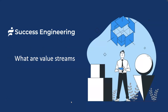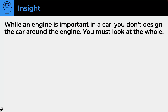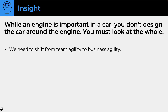This session is about what value streams are, starting from the basics. One of the things about value streams is that it gives us a picture of the whole. Like an engine is important in a car, but you don't design the car around the engine — you have to look at the whole. Sometimes in the agile space we've designed agile around the team, but the team is not the whole.